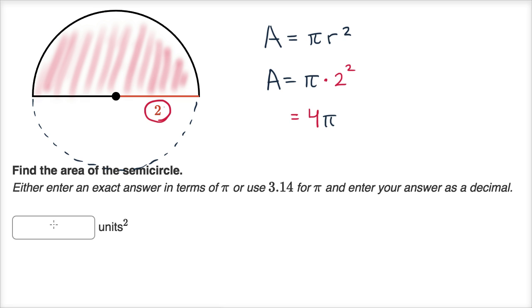So instead of four pi, it is going to be two pi square units. That's the area of the semicircle.